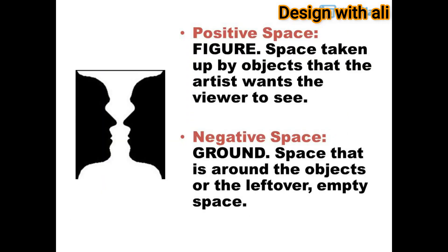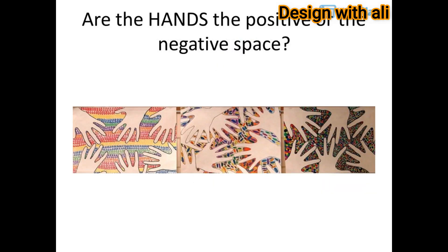Positive space — also called figure — is the space taken up by objects that the artist wants the viewer to see. Negative space — also called ground — is the space around the objects, or the leftover empty space. Are the hands the positive or the negative space?